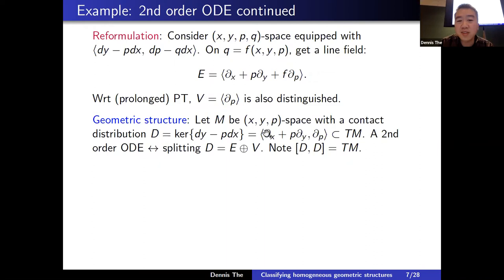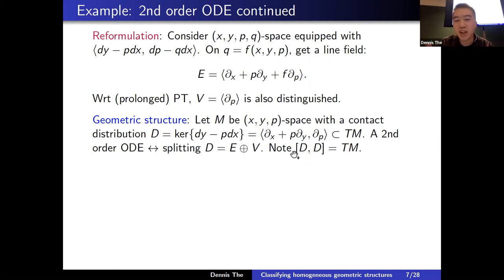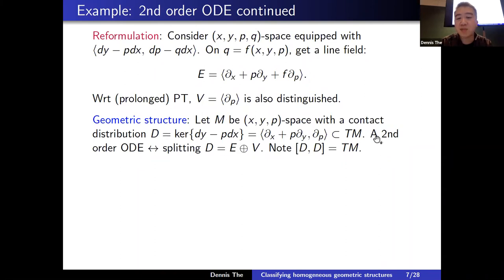When you take brackets of sections of this distribution with itself you fill up the entire tangent bundle. Notation: when I write D bracket D I include D itself — technically the derived distribution is D + [D,D], but I use shorthand. Conversely, starting with a three-manifold with contact distribution and a splitting, you can always introduce coordinates rectifying one line field V to a standard form and E into another form involving some function f of three variables.